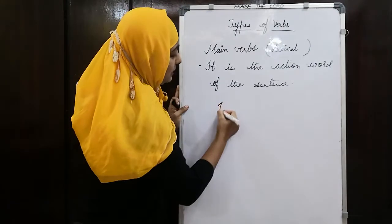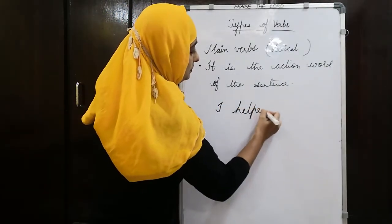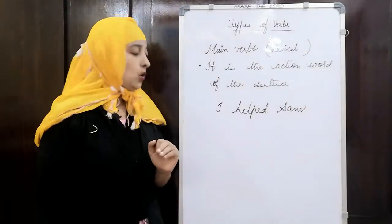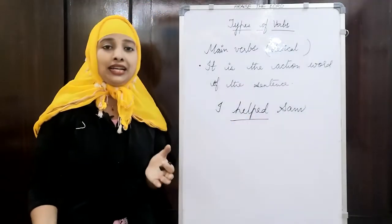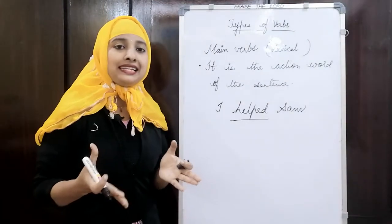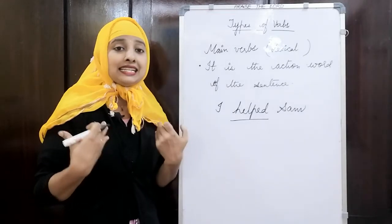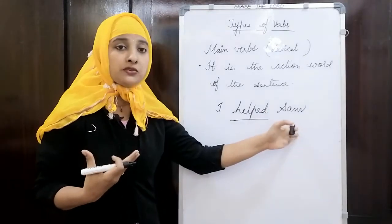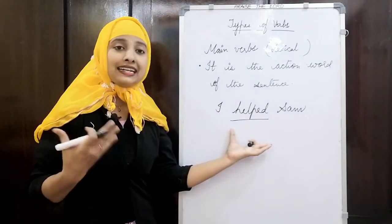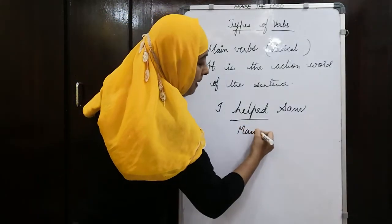For example: 'I helped Sam.' Here you can see the action being done is helping. Who is helping? I. The subject is helping the object, which is Sam. This is directly identified as the action being done, and here 'helped' is the main verb. They can stand alone — you don't need other helping verbs.